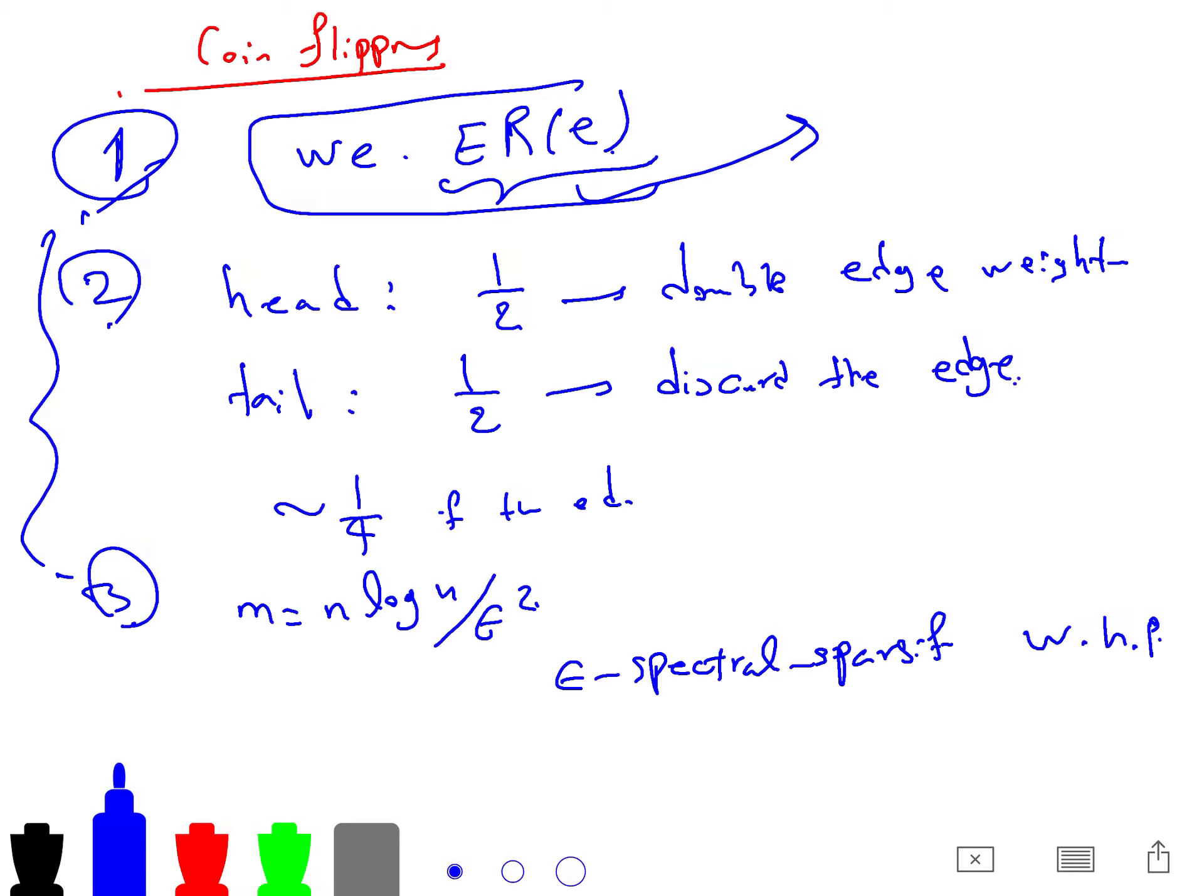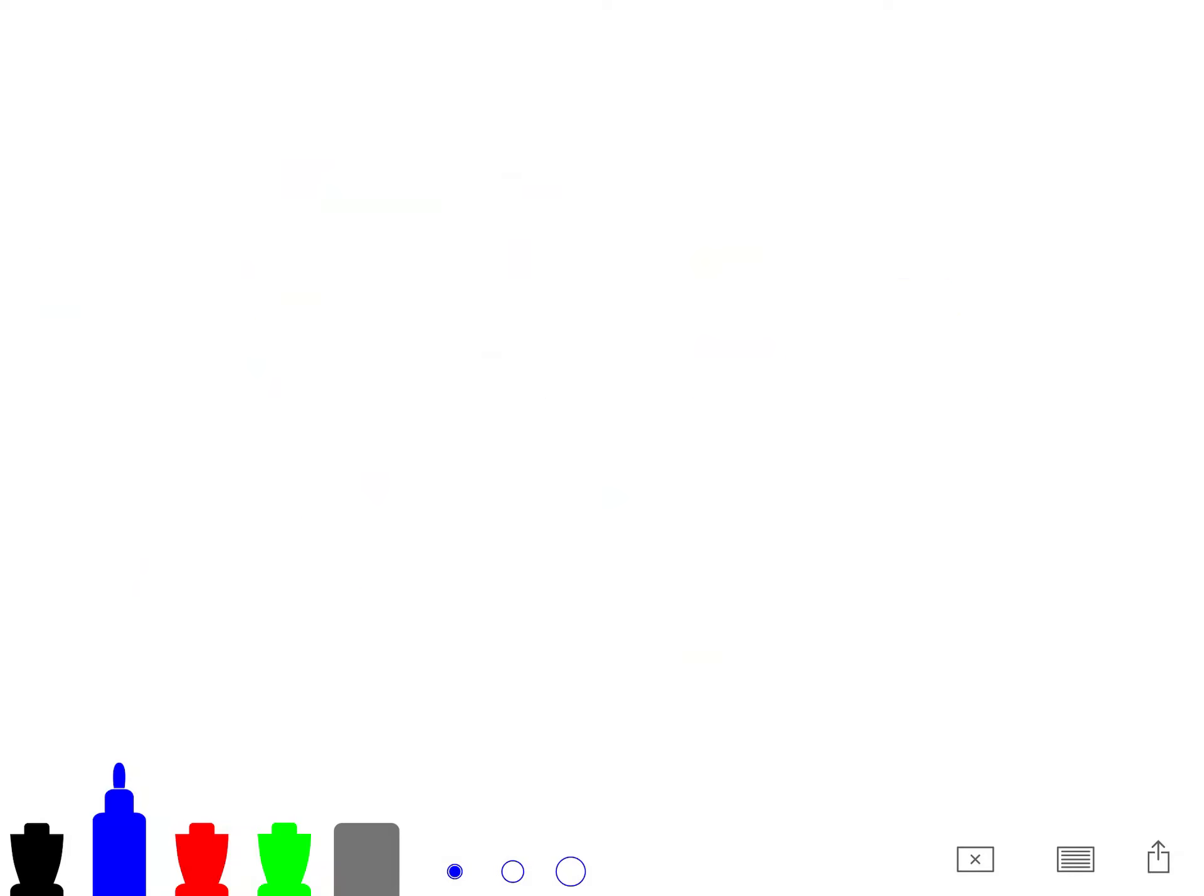So the resulting graph is epsilon spectral sparsifier with high probability. An expectation of the weights in the random matrix is exactly weights of the original matrix. So we just apply the concentration theorems.